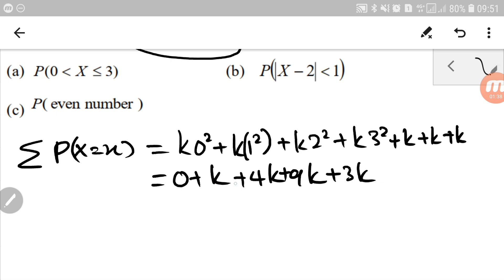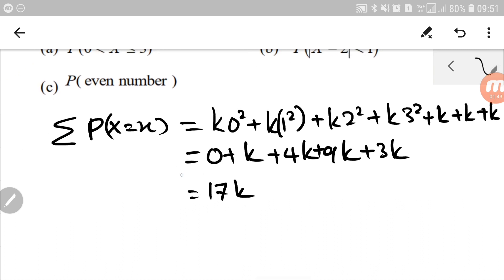And then 3k. So 1, 4, 9, 3 is 17k and the sum of all probability must equal to 1. Therefore, k is 1 over 17.